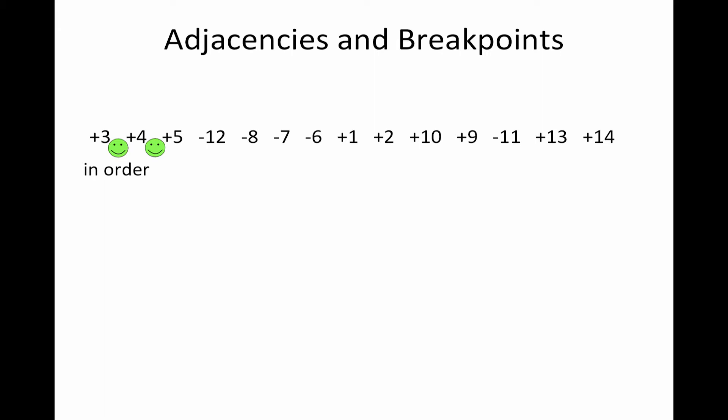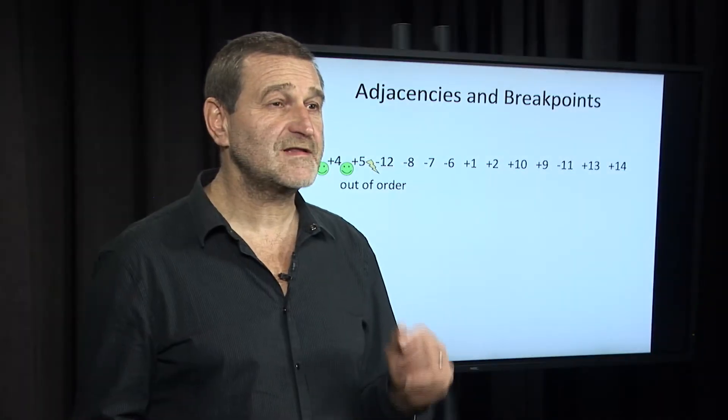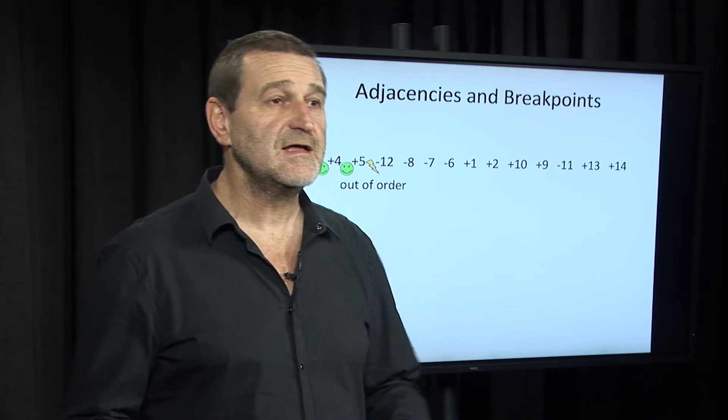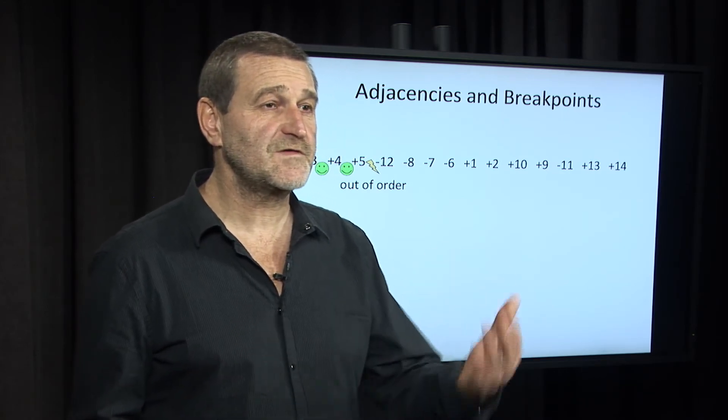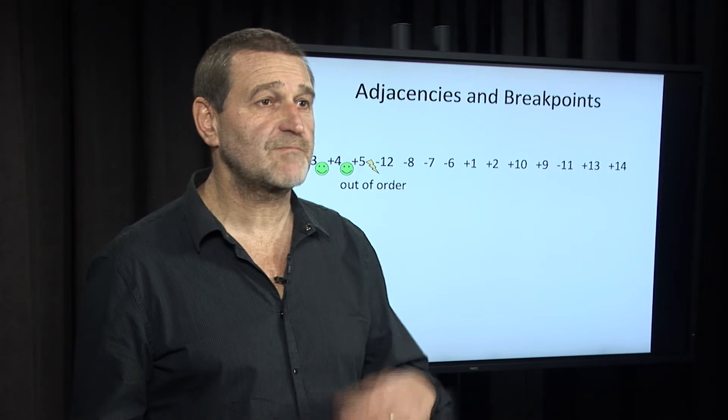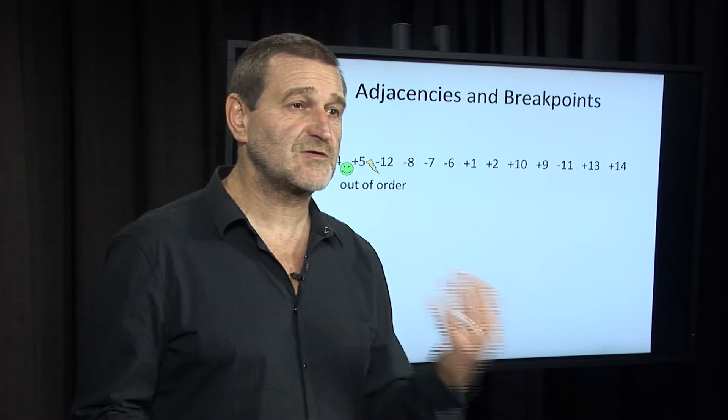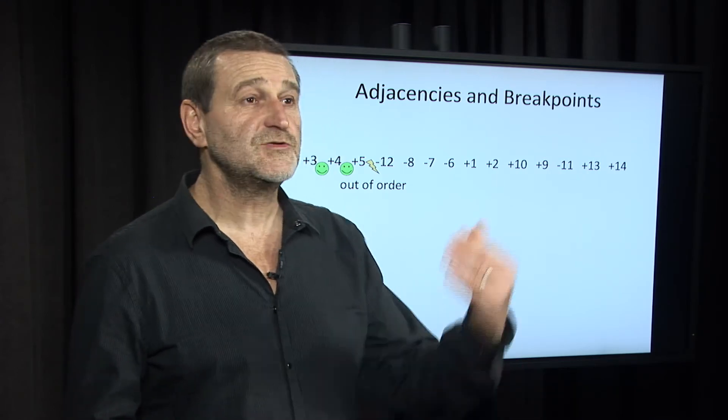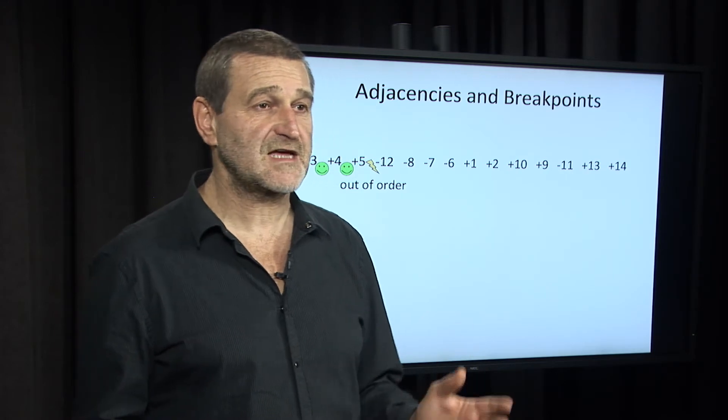Plus four and plus five, the same story. Plus five and minus twelve is definitely out of order. And certainly, there should be a breakpoint that cuts between them. So there should be a reversal with one of its endpoints between plus five and minus twelve, because otherwise we will never be able to transform this permutation into the identity permutation.